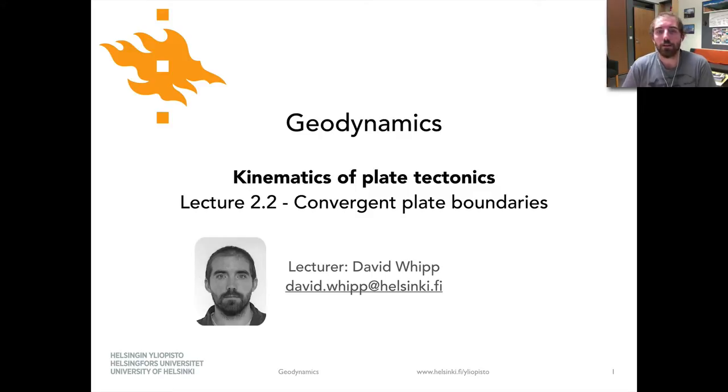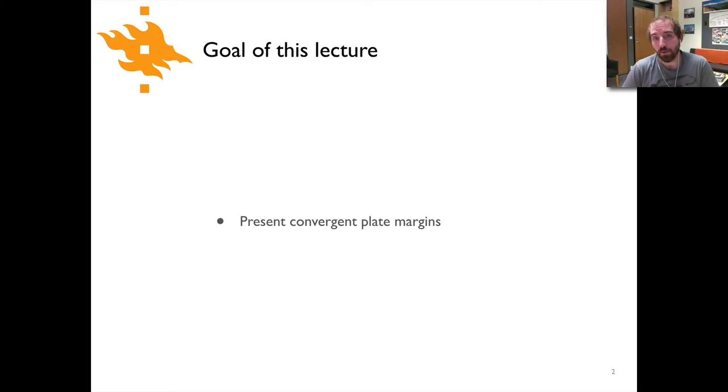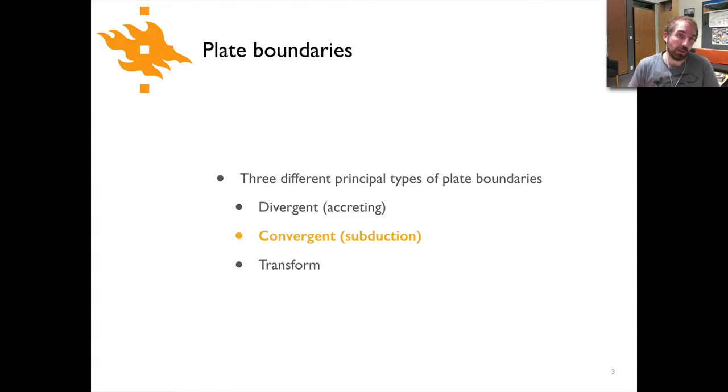Welcome back to the second in our series of lectures about the kinematics of plate tectonics, now talking about convergent plate boundaries. Previous lecture was about divergent plate boundaries where they were moving apart. Here we're going to talk about plates that are moving together. I mentioned the last lecture would be relatively short, and I don't think it was particularly short. Hopefully this one is, it should be. We have again only one goal in this lecture, and that is to present the essential features of a convergent plate boundary, which again is one of the three types of plate boundaries that we're going to be looking at.